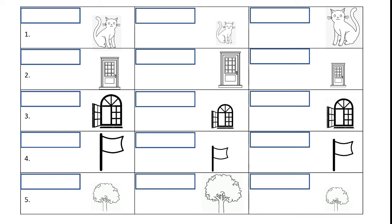I want you to find the tallest cat first. That's right, that's on the last row — so you're going to write 'tallest.' After you finish with the tallest, let's compare between the two remaining pictures. That's right, the one on the first row is taller, so let's write 'taller.' The third one is 'tall.' Excellent!